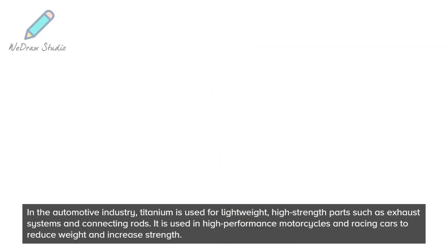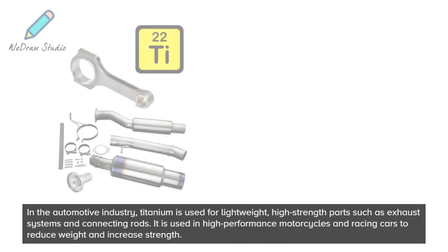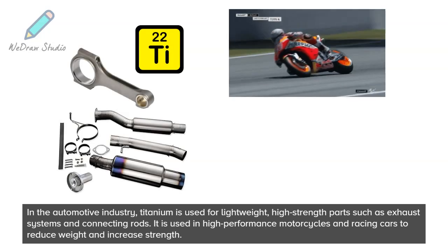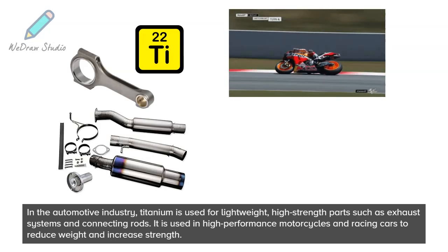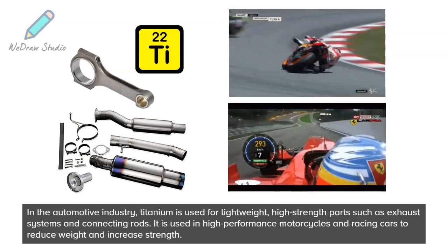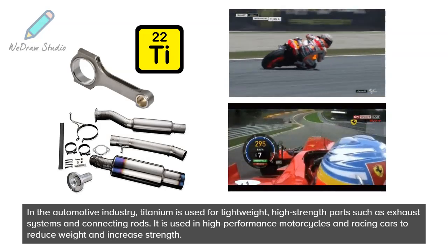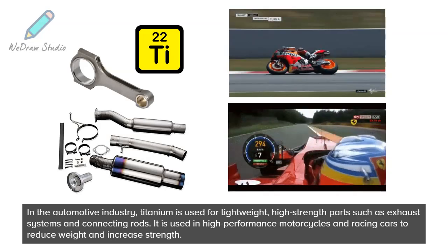In the automotive industry, titanium is used for lightweight, high-strength parts, such as exhaust systems and connecting rods. It is used in high-performance motorcycles and racing cars to reduce weight and increase strength.